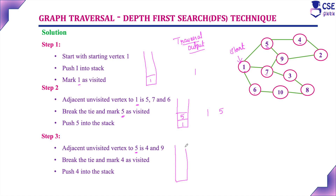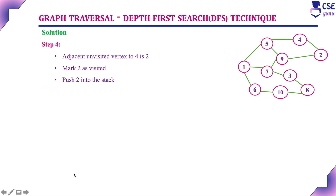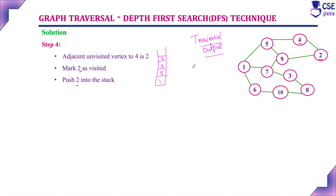The currently visited vertex is 4. Consider the adjacent unvisited vertex to 4, that is 2. Mark 2 as visited and push 2 into the stack. The stack already contains 1, 5, 4; now we push 2. The traversal output is 1, 5, 4, 2.